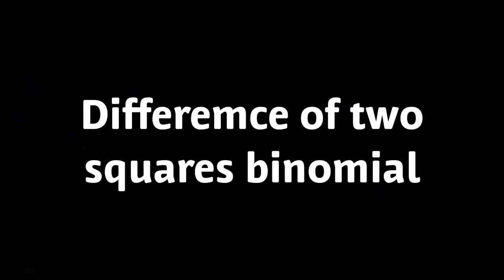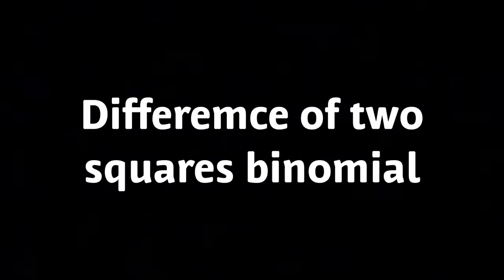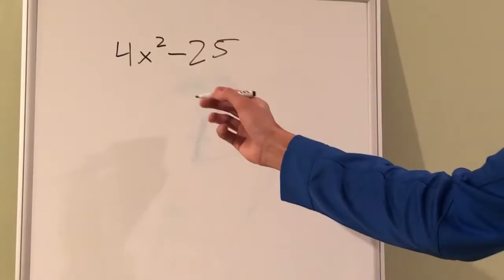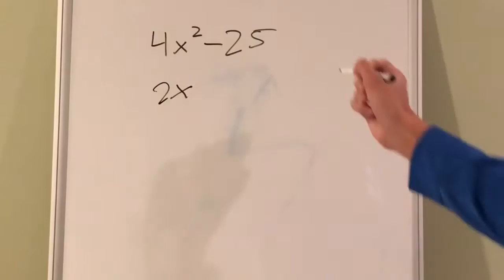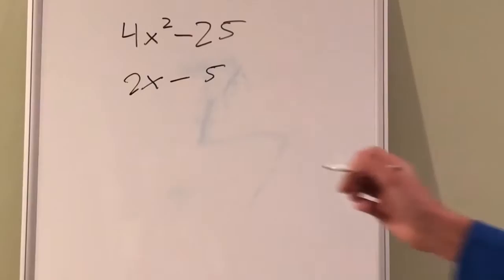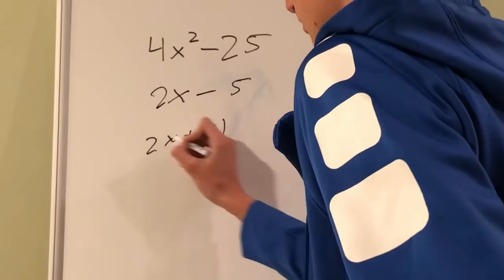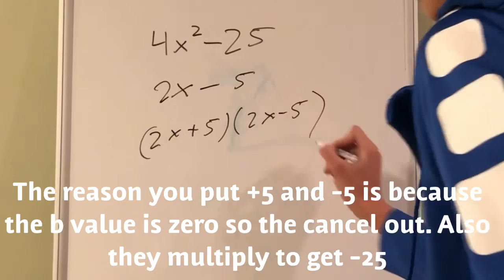In this video, I will be explaining how to know when you have a difference of two squares binomial. First, check if you have a binomial, and if you do, look to see if it's a difference of two squares. To factor this, get the square roots of both numbers, add them in one set of parentheses, and subtract them in the other, then multiply those together. In this equation, we have 4x squared minus 25. The square root of 4x squared is 2x, and the square root of 25 is 5. So you get (2x plus 5) times (2x minus 5).